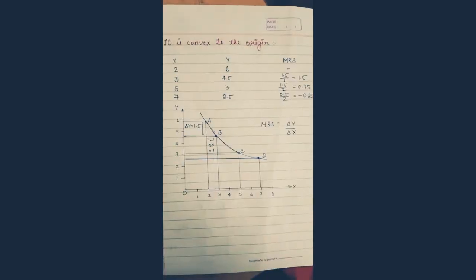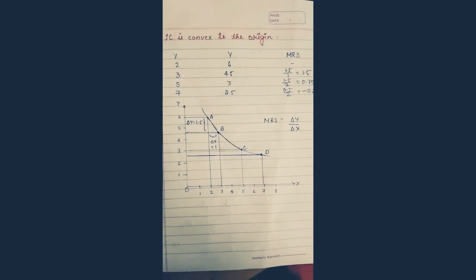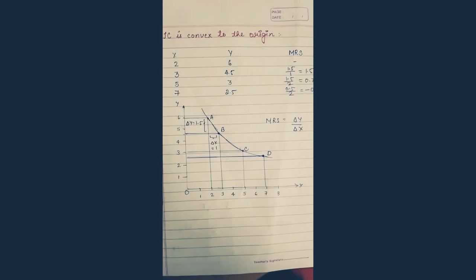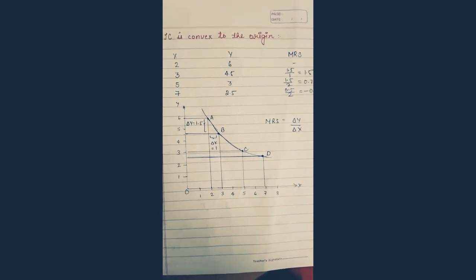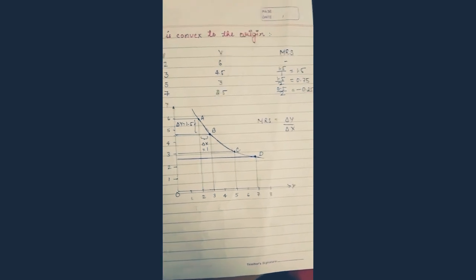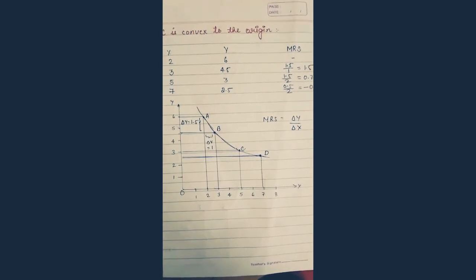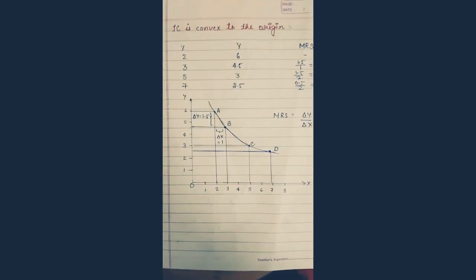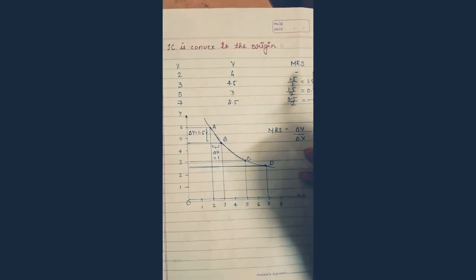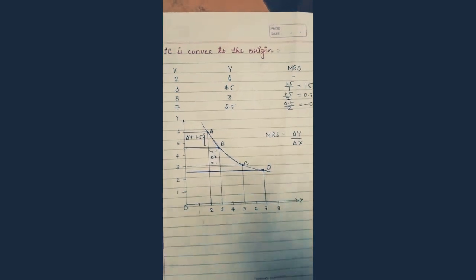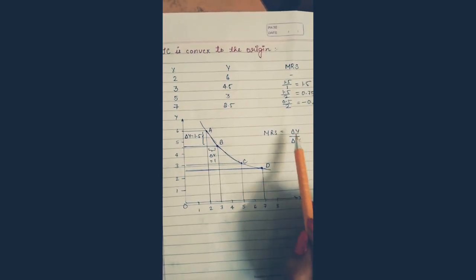IC is convex to the origin due to MRS — marginal rate of substitution. Marginal rate of substitution refers to the units of good a consumer has to sacrifice for consuming more of good X. To calculate MRS, we use the formula Δy upon Δx, the same as the slope of IC.